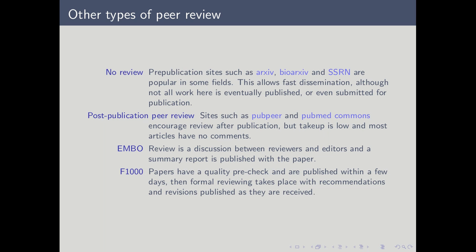A couple of journals operate other systems. EMBO, a molecular biology journal, has reviewers engage in a discussion with the editors, and then the authors receive a kind of summary report which is published alongside the paper — it's a much more collective idea. F1000, a spin-off from the Faculty of 1000 website, is a journal where papers receive a very quick quality check as soon as they come in, and within two or three days they are published online, then formal review takes place. As the reviews come in, the recommendations are published on the website, then the revisions by the authors are published, and you can follow the review process as it happens on their website.